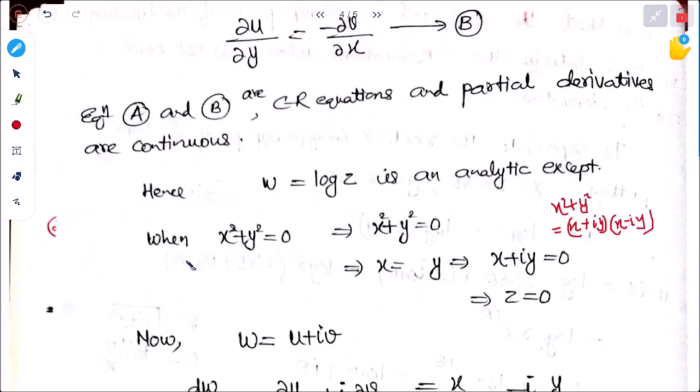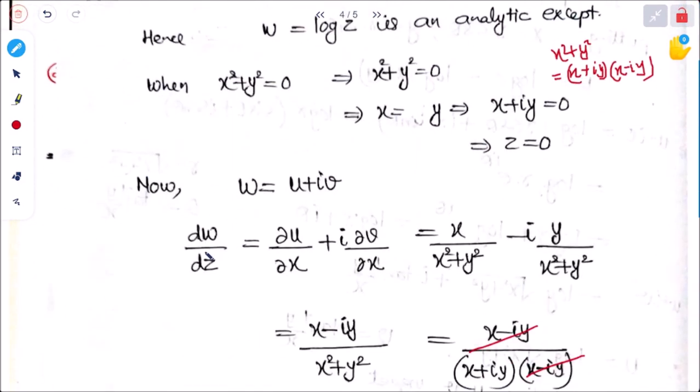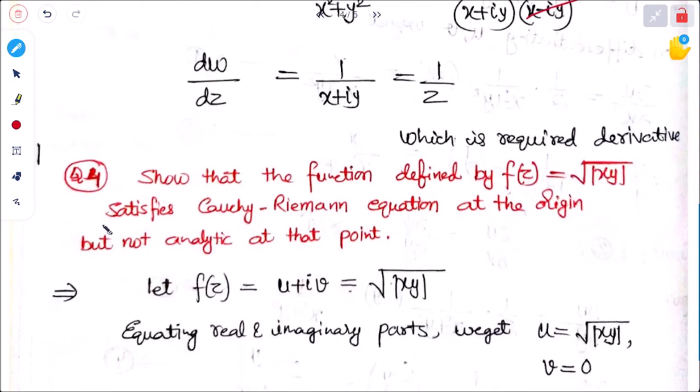At z = 0, this derivative is not defined because substituting 0 gives infinity — so the derivative cannot be found at that point.